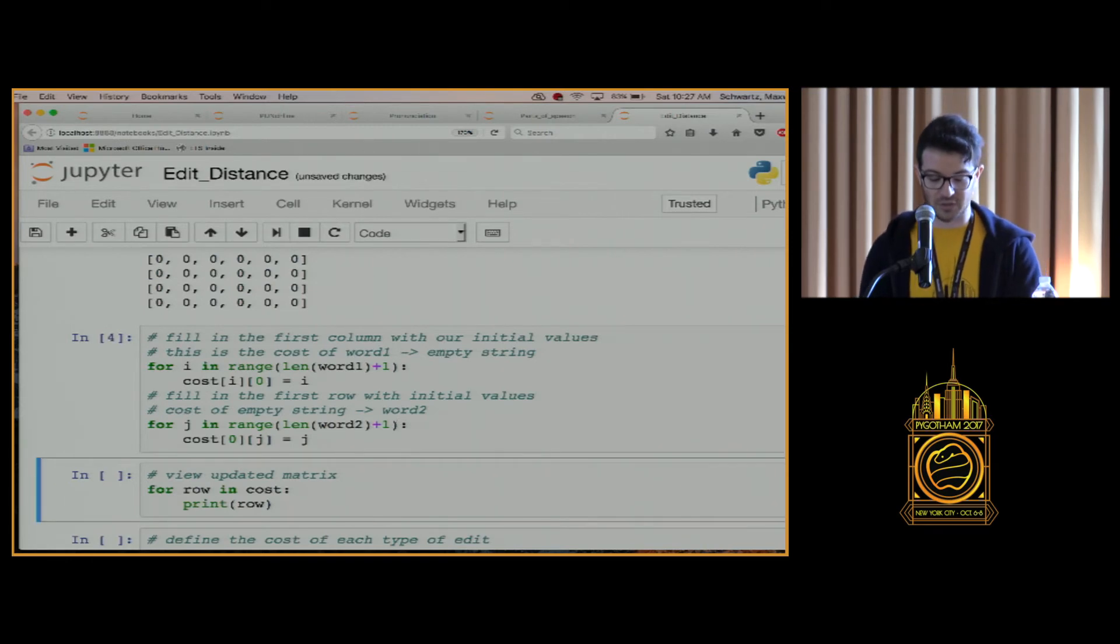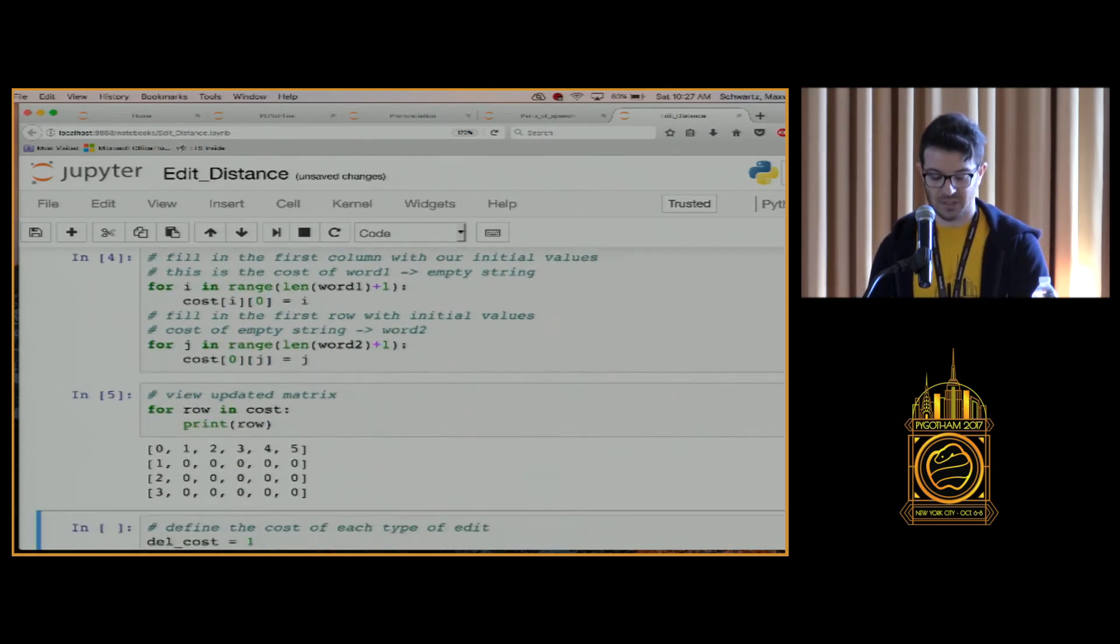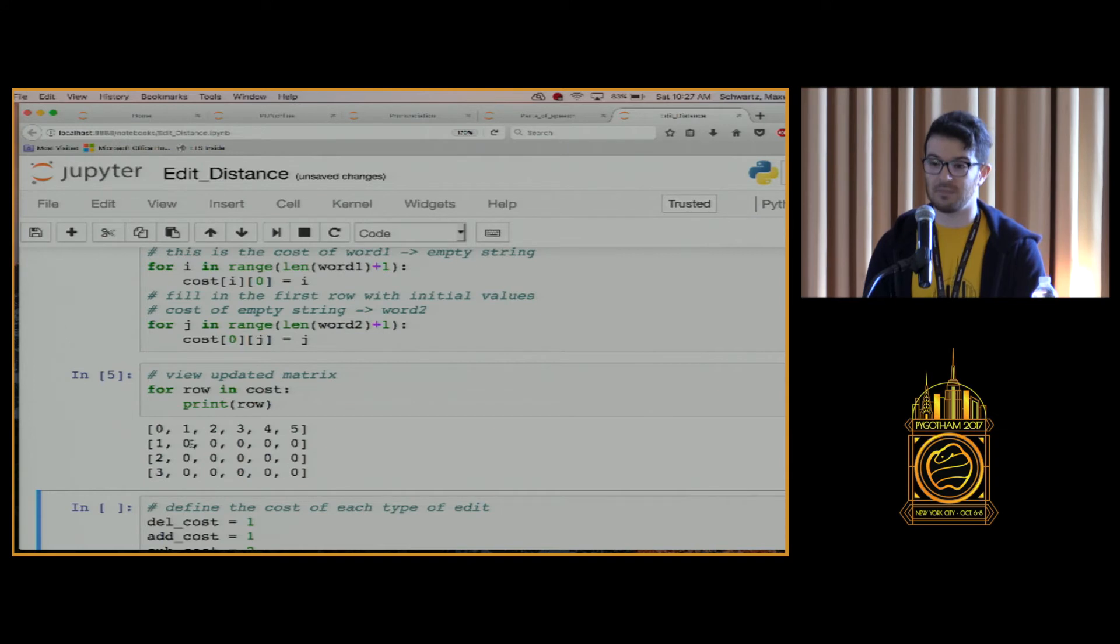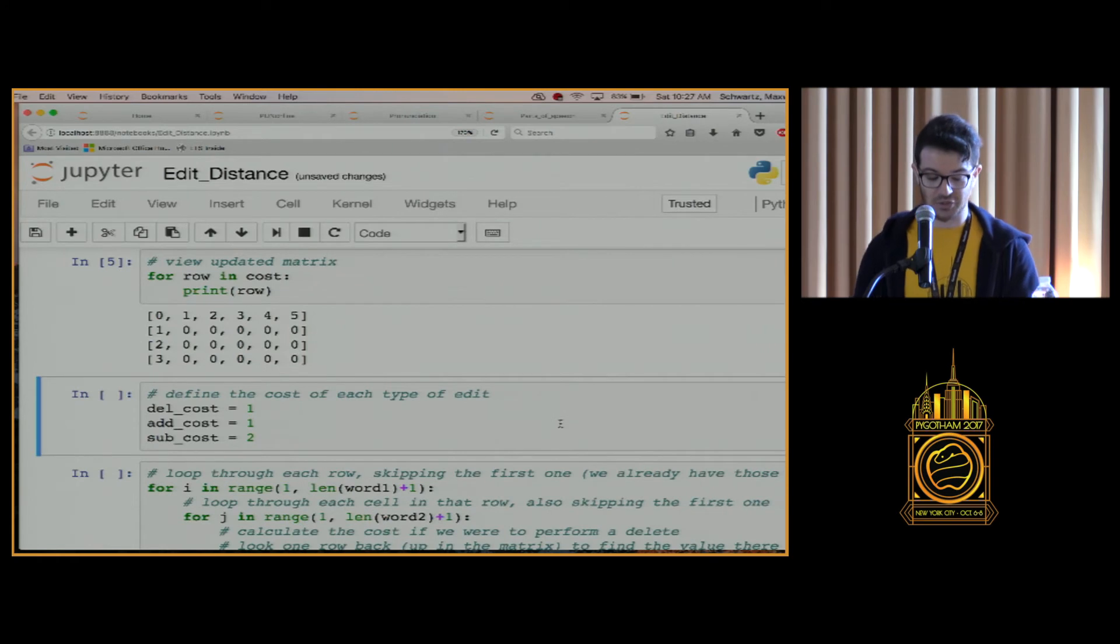Next, we're going to fill it in with the initial costs, right? So, this is what we saw at the beginning of that matrix. We know what the cost of just inserting from the empty string is and we know what the cost of deleting to the empty string would be. So, we have our initial costs in there. Finally, we should define what our actual values are. We're going to stick with the deletion and addition as being one and a substitution as being two.